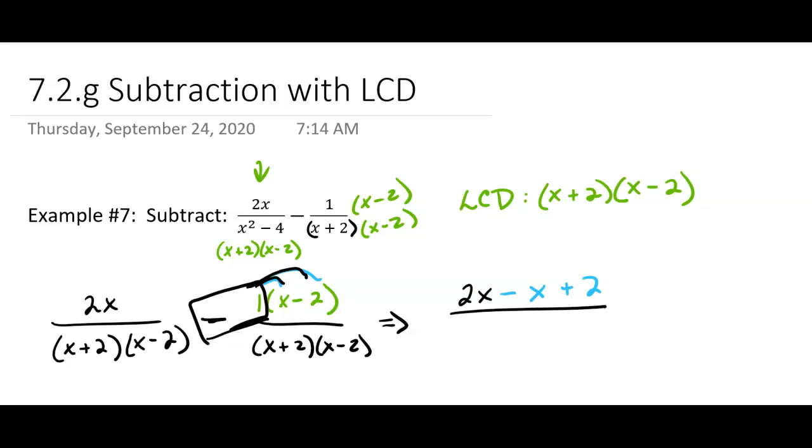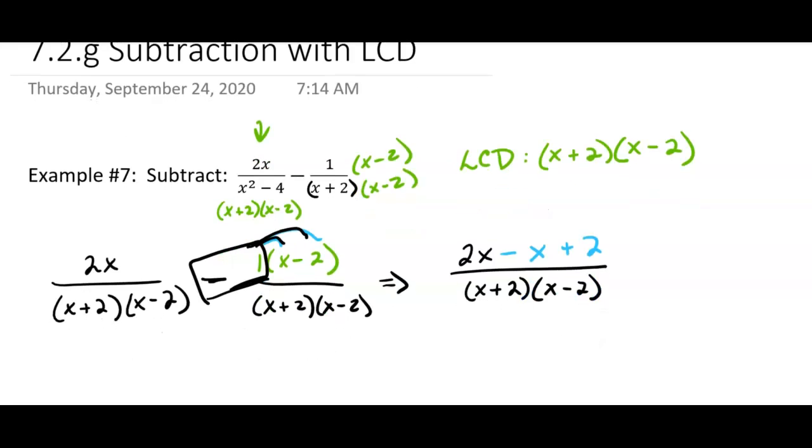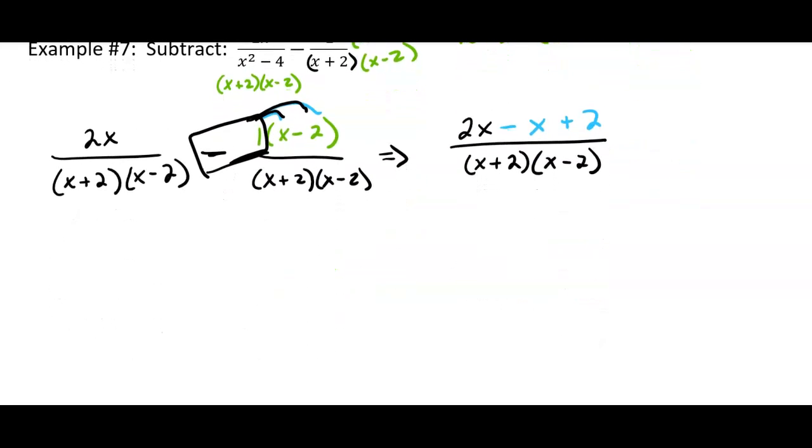Now in the denominator, we have (x plus 2)(x minus 2) still. That's our common denominator, and we can simplify the numerator. So 2x minus x is just x, plus 2, so we have (x plus 2) over (x plus 2)(x minus 2).